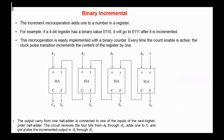Next, the binary incrementer. The increment micro operation adds 1 to a number in a register. It can be implemented using a cascade of half adders with an input carry equal to 1. For example, if a four-bit register has the binary value 0110, after the increment micro operation we'll have 0111. The result after the increment micro operation can be stored in the same register or in another register — for example, increment R1 and store the result in R2 or back in R1.